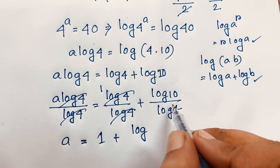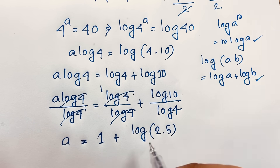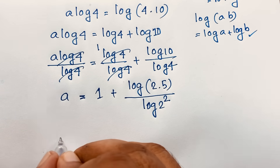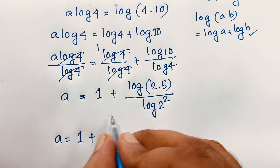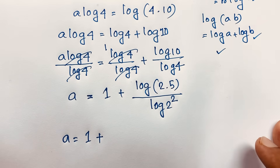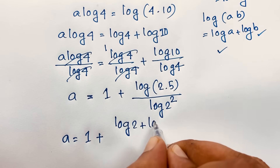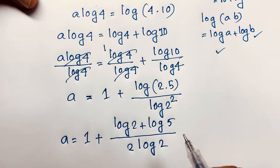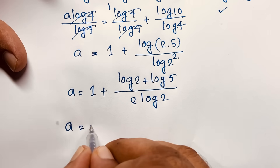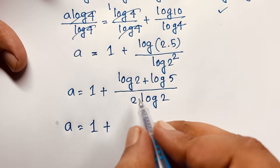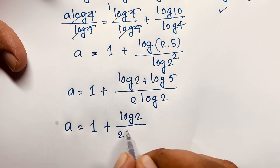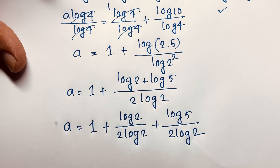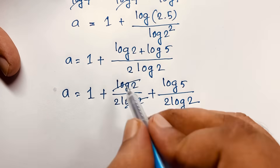Now I evaluate log 10 over log 4. Note that 10 equals 2 times 5, and log 4 equals log 2 squared equals 2 log 2. Applying the product rule again, log 10 becomes log 2 plus log 5. So we have a equals 1 plus (log 2 plus log 5) over 2 log 2. Since log 2 over 2 log 2 simplifies to 1 over 2, this gives a equals 1 plus one-half plus log 5 over 2 log 2.